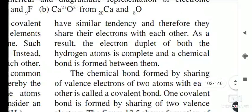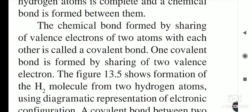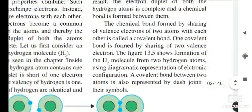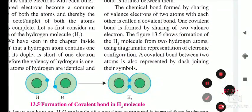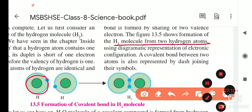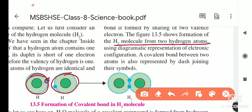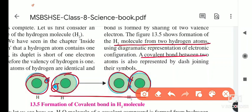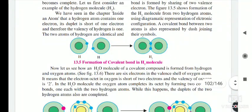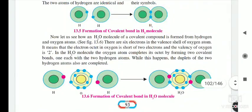A covalent bond between two atoms is also represented by a dash joining their symbols. We can show the bond using a dash or using dots. Now let us learn how the H2O molecule is formed — here is the formation of the H2O molecule, a covalent compound formed by hydrogen and oxygen atoms.